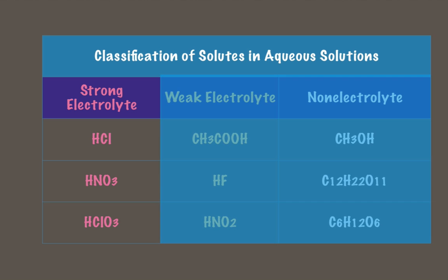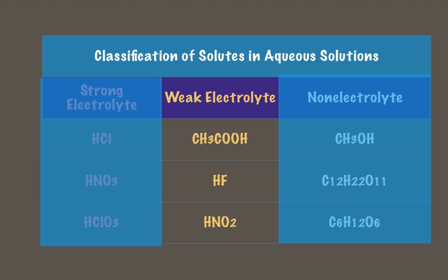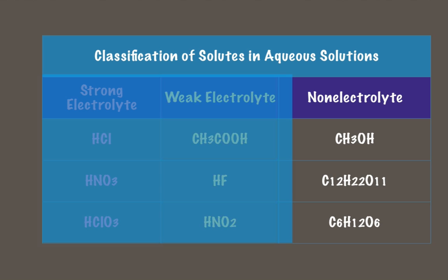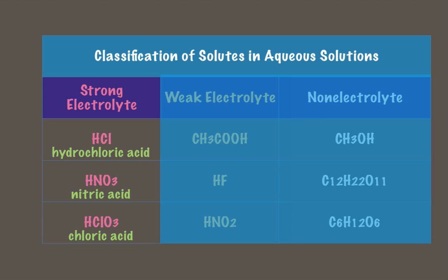So here I have a table of some strong, weak, and non-electrolyte compounds. Let's take a look at some of the examples for the strong electrolytes: hydrochloric acid, nitric acid, chloric acid, acetic acid, hydrofluoric acid. And then some non-electrolytes, some of the sugar families. Sugars will not dissociate completely in water. So let's see what these would look like in an actual chemical equation.